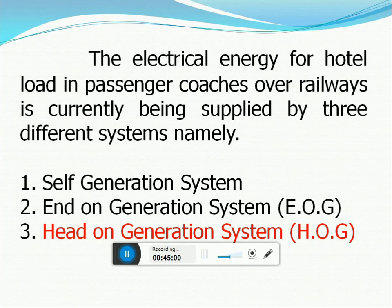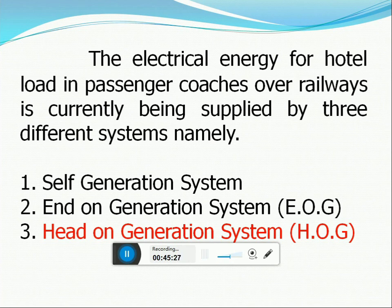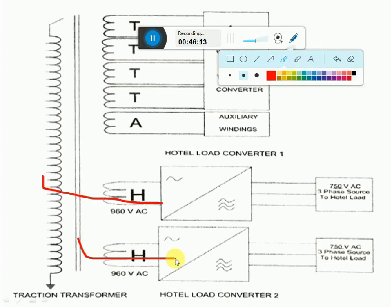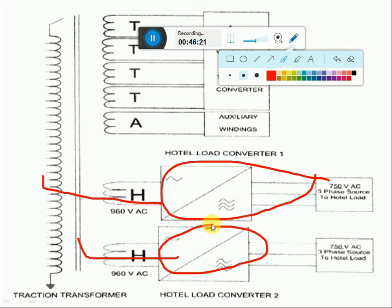This supply can be given by 3 ways: one is the self-generation system, the end-on generation system (EOG) using two generators at the ends, and the Head-on Generation (HOG) system where supply is given from the loco by keeping one extra hotel load winding. From the hotel load winding it is stepped down. In the HOG system, two photo load converters are provided with two additional windings. The supply taken from the main winding is converted from single-phase to three-phase, and that three-phase supply is given to the coaches.